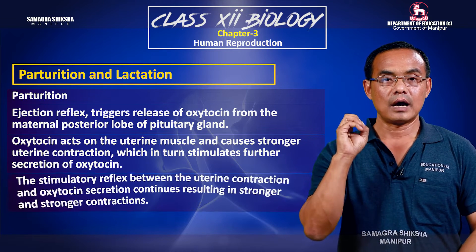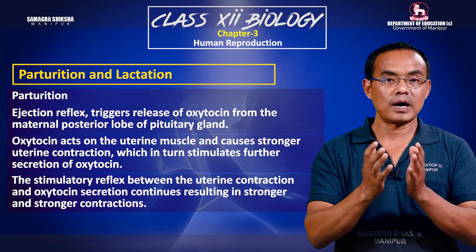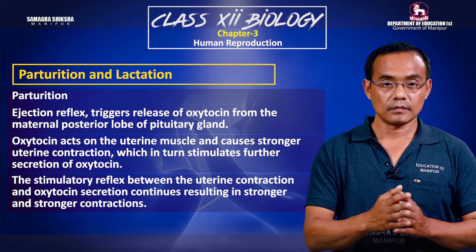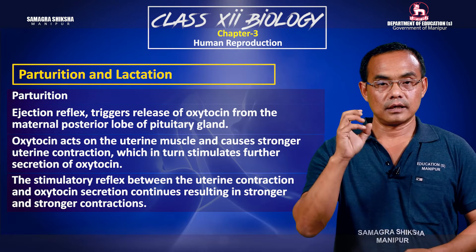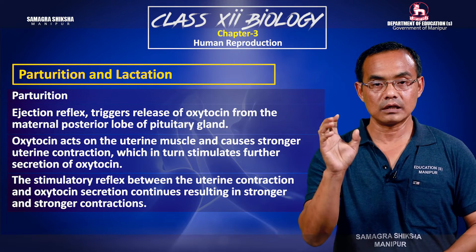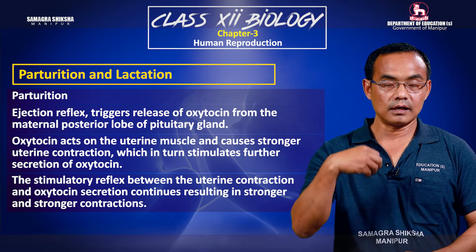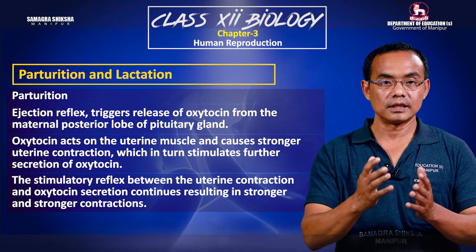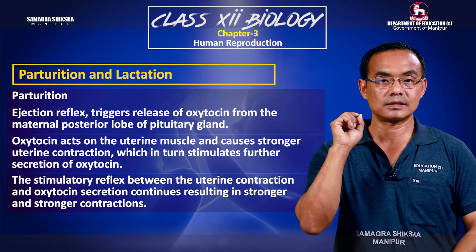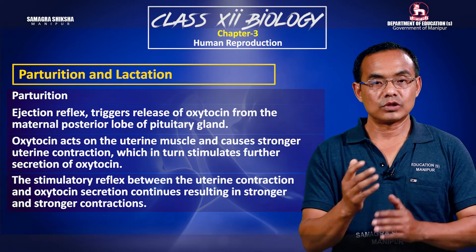The contraction process involves oxytocin acting on the uterus. If you have oxytocin, the uterine contractions increase. This hormone is crucial to causing the progression of labor and delivery.